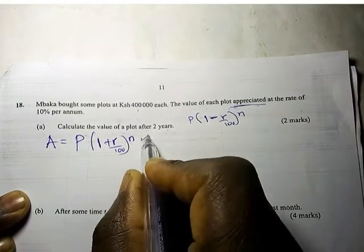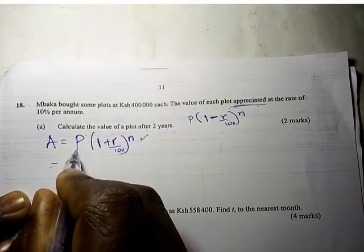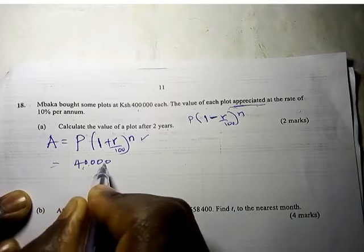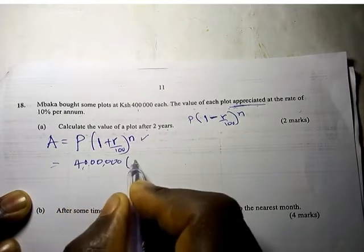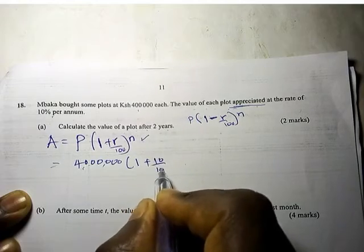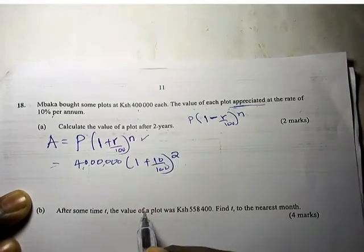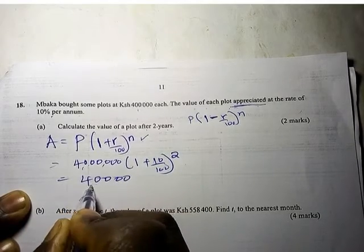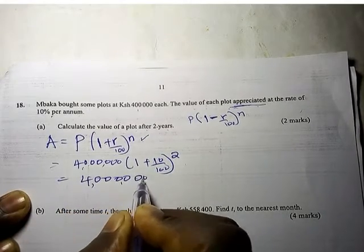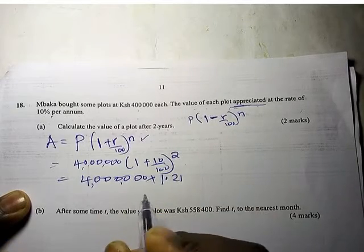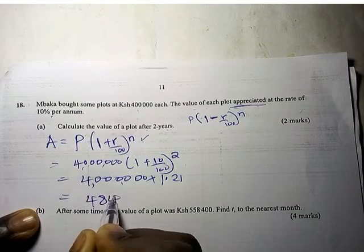Our principal is 4 million into 1 plus the rate is 10 over 100. After 2 years, our n is 2. This is 4 million times 1.21, and this one is 484.